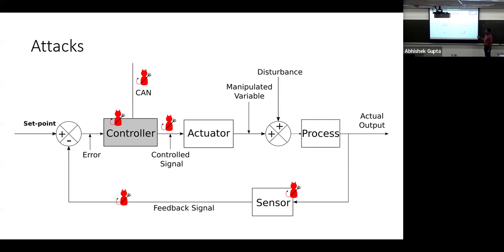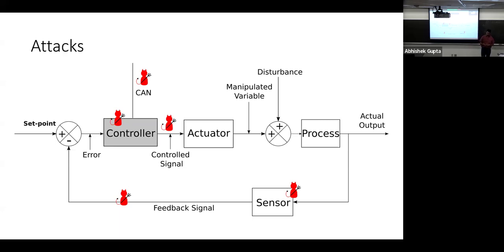You can think about various places where an attacker can attack this system. Starting with the sensor: if you just press your hand in front of the temperature sensor, your body temperature of 98–99°F makes it read that the room is very hot, causing it to pump in a lot of cold air. They put a casing on the sensor to prevent that. But you can also attack the network carrying the feedback signal to the controller and change that signal without touching the sensor.